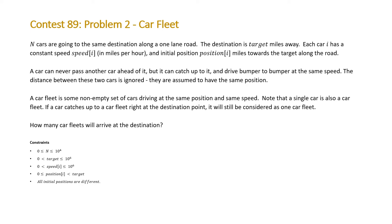Note, the distance between these two cars is ignored. They are assumed to have the same position. A car fleet is some non-empty set of cars driving at the same position and same speed. Note that a single car is also a car fleet. If a car catches up to a car fleet right at the destination point, it will still be considered as one car fleet. The question asks, how many car fleets will arrive at the destination? Note, the number of cars is between 0 and 10^4, and the target, speed, and position are all between 10^6, with all positions being less than the target.